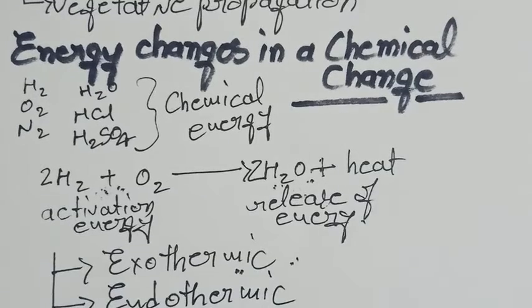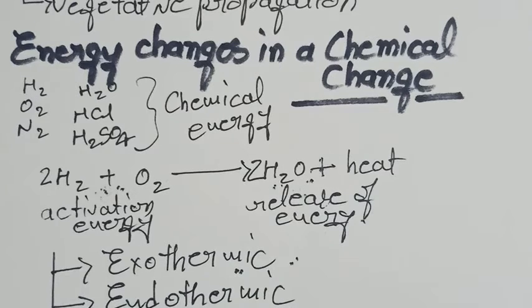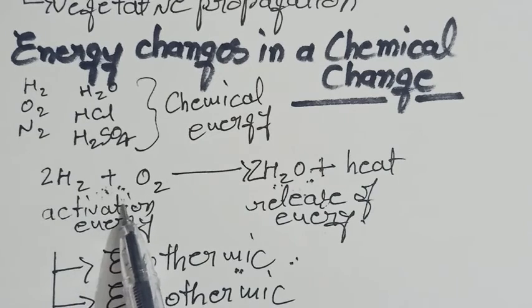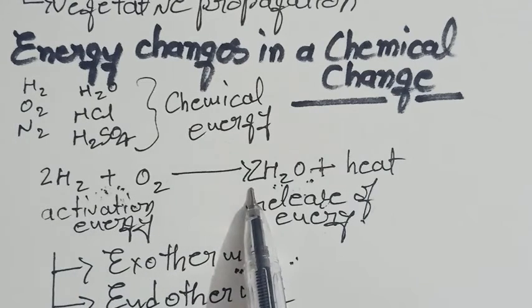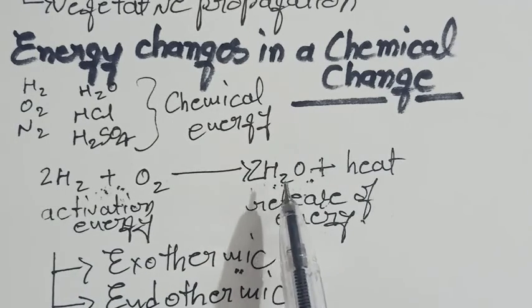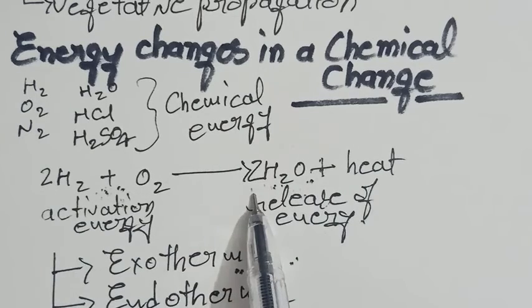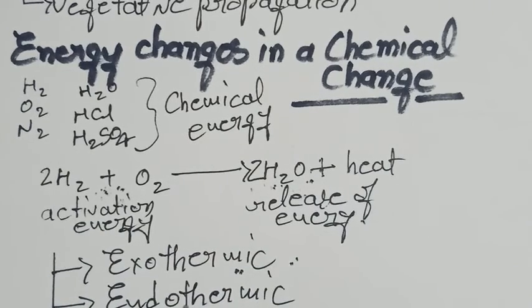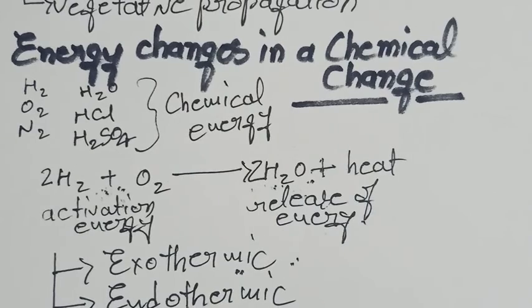The next one is endothermic reactions — a chemical reaction which proceeds with the absorption of heat. In such a case, the total energy of the reactants is always less than the total energy of the products. That is why the products are having higher energy and require more energy, so such reactions proceed with the absorption of energy.